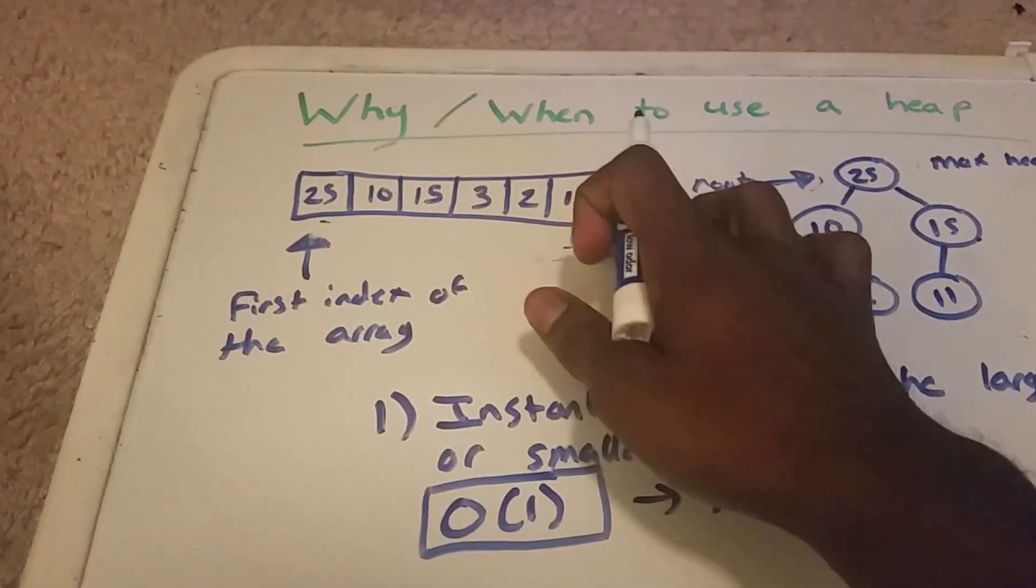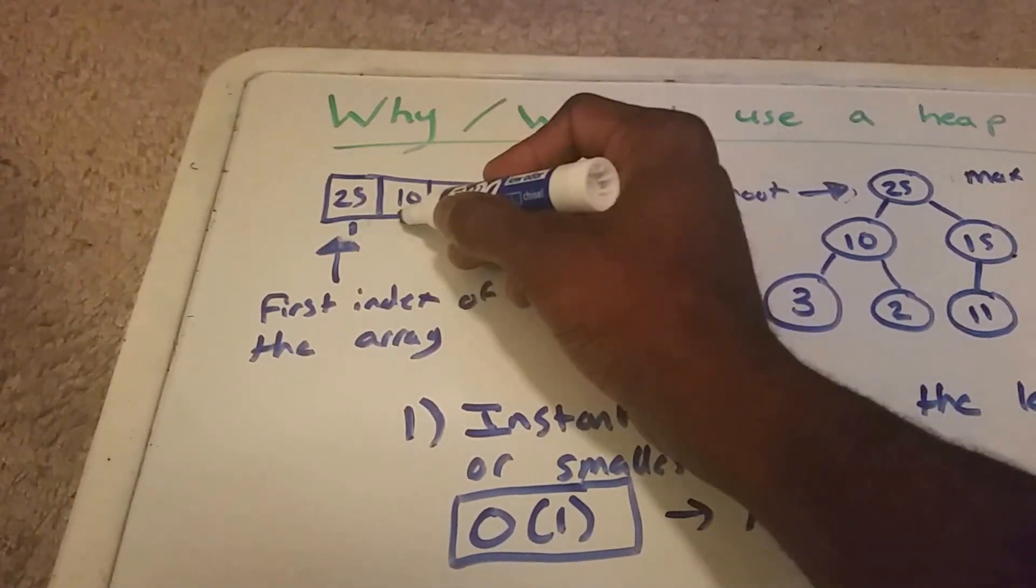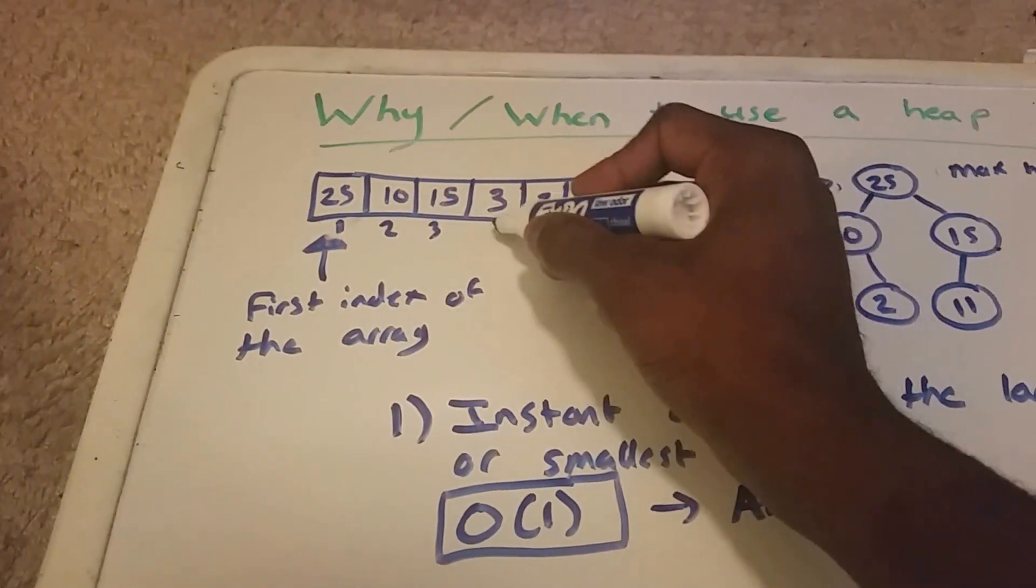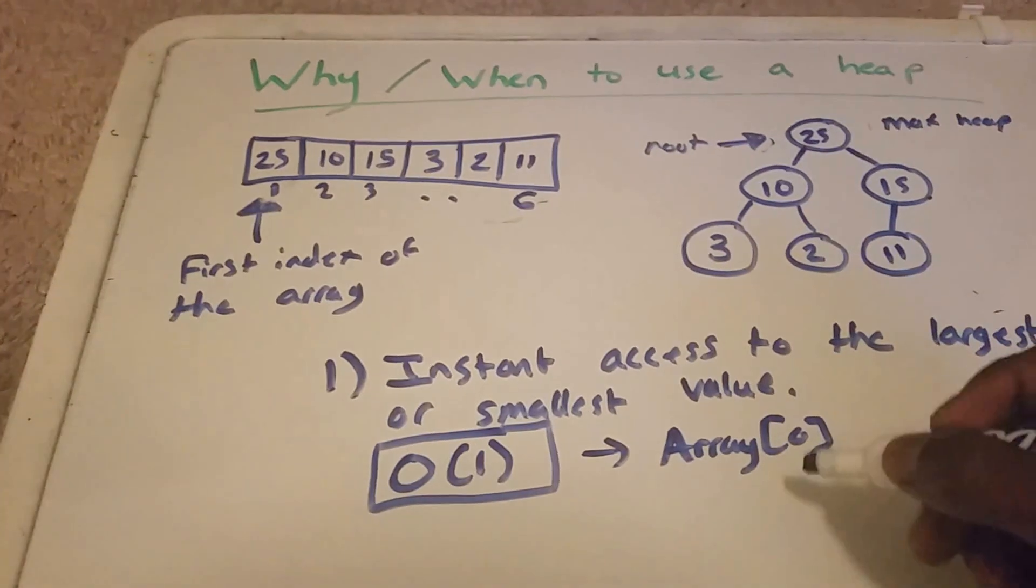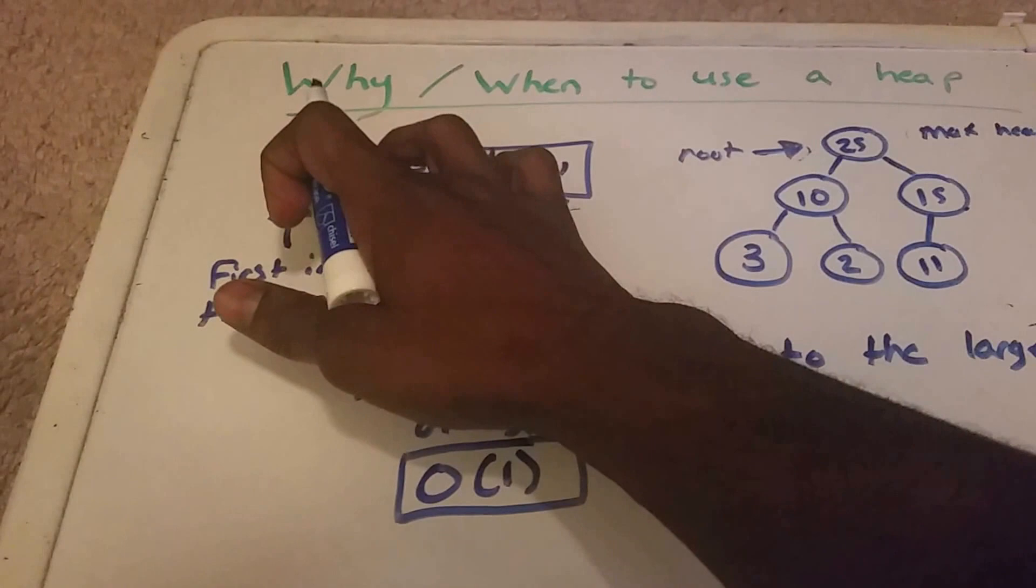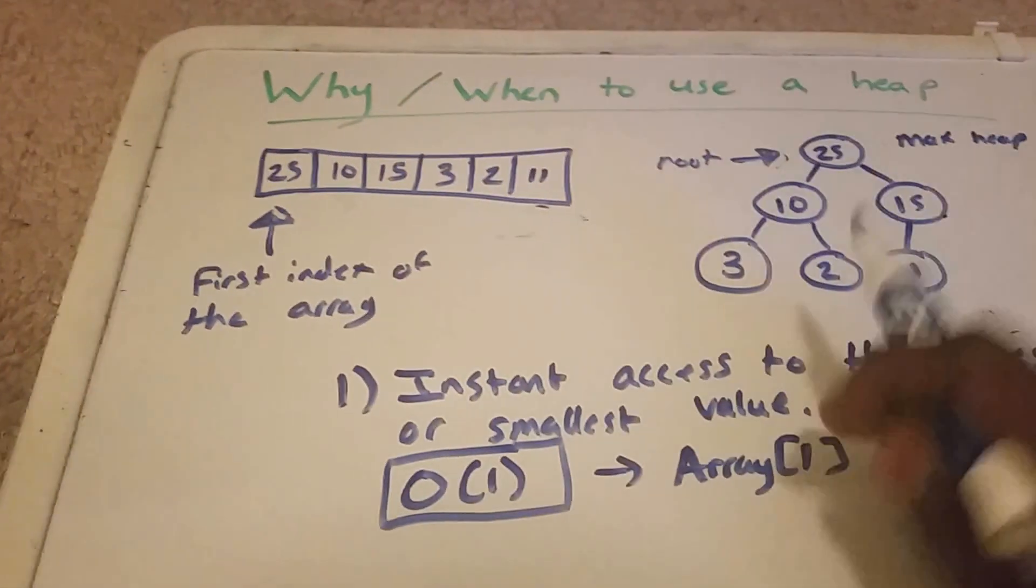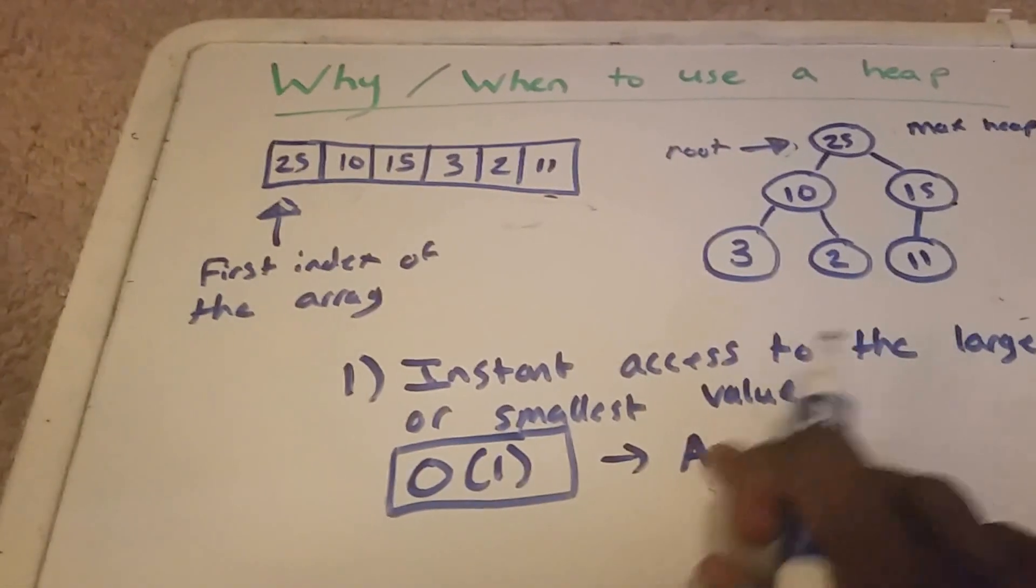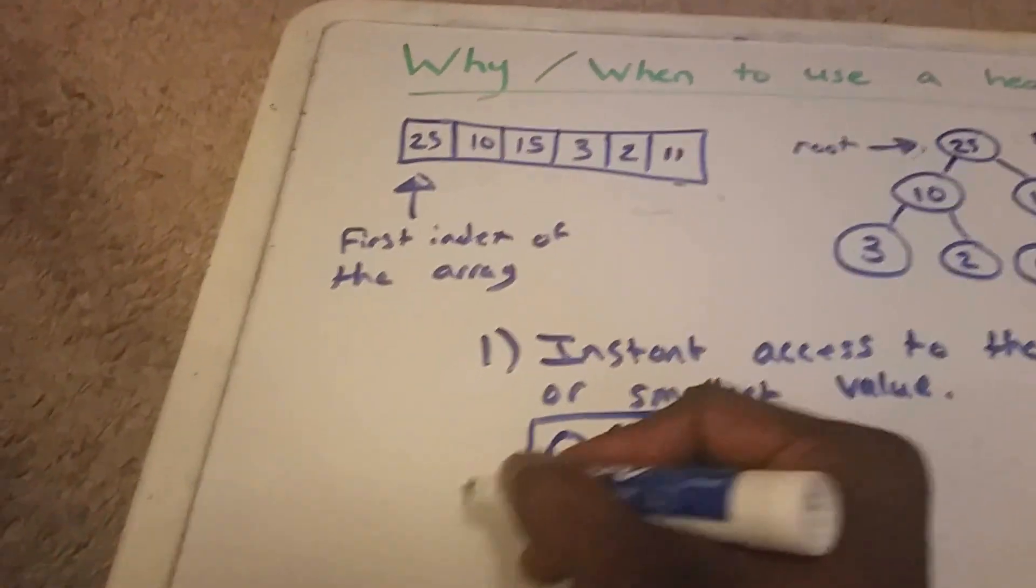And if this started from 1, so 1, 2, 3, 4, 5, 6, then this would be array at position 1. So all depending on how you set up your array. But we know that it's going to be at the start of the array, constant time.